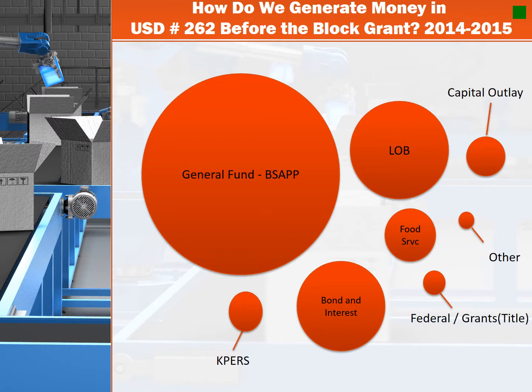This particular slide illustrates the size of the various pots of money districts use in order to operate. This slide illustrates 2014-2015, which was then based on a formula. In 2015-2016 and this school year 2016-2017 we are under a block grant, so basically the various pots of money are almost identical.